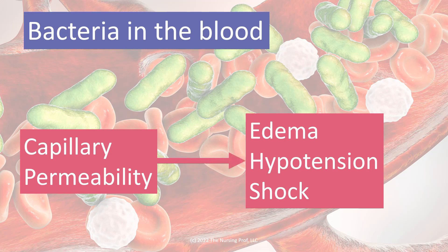Secondly, we get capillary permeability. It doesn't really help to have all these capillaries expanded if we're not allowing the things that need to get out — like oxygen, white blood cells, and other things — to get out of the bloodstream and into the tissues. So capillary permeability allows those white blood cells to get out there and attack the bacteria. But remember, the bacteria is in the blood, so this capillary permeability is going to happen throughout the entire body, causing edema, hypotension, and shock.